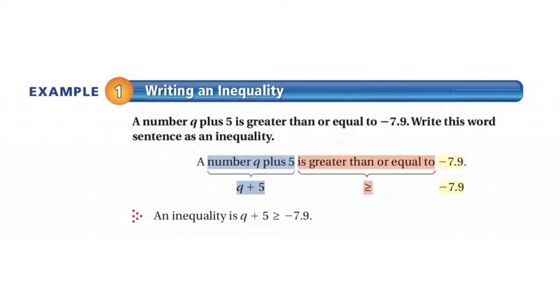So in example 1 here, a number q plus 5, so we know how to write that, q plus 5, is greater than or equal to. Well, that's easy. We use the greater than or equal to symbol, which means it has that little line underneath the greater than symbol to mean or equal to, negative 7.9. So, q plus 5 is greater than or equal to negative 7.9.